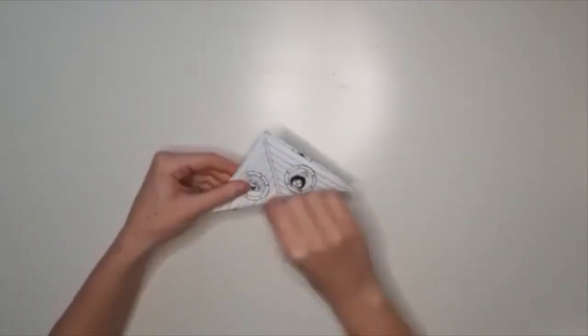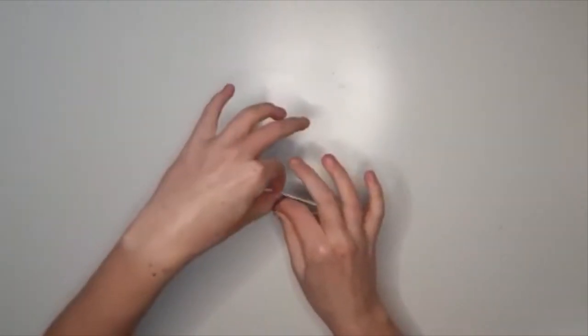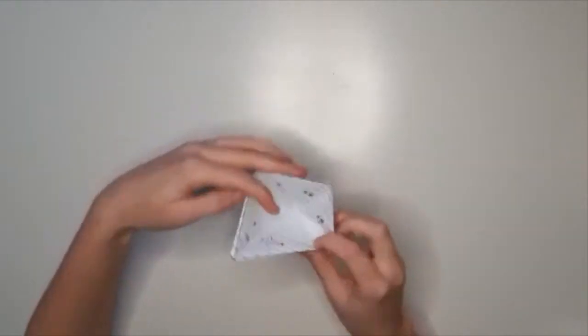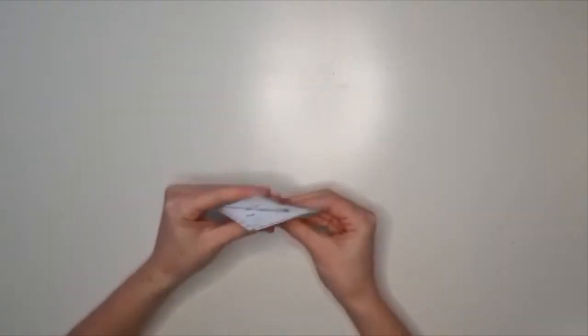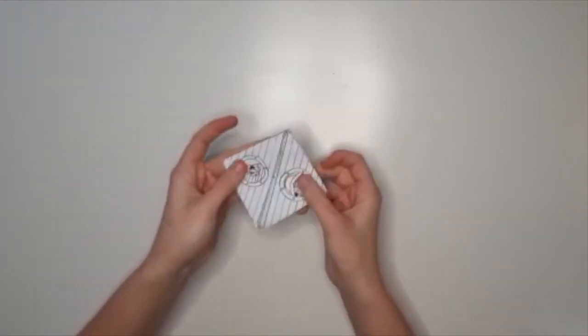Now you have a triangle. Turn it so that it points at the table again, and open it up in the way that you did before to make a beak. Once more, fold it again in the opposite direction. So now you have this square.